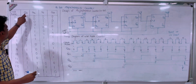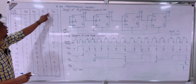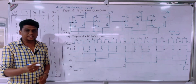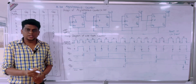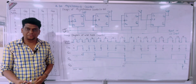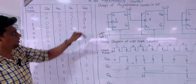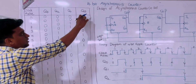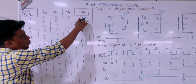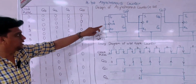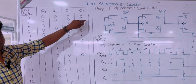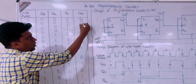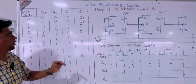Since it is a 4-bit counter, we have outputs Q3, Q2, Q1, and Q0. The state diagram starts from 0, 1, 2 up to 15. For every clock pulse, Q0 toggles — for example, it goes 0, 1, 0, 1, 0, 1. So for every clock pulse we get a toggling: 0 to 1, 1 to 0, 0 to 1, and so on.